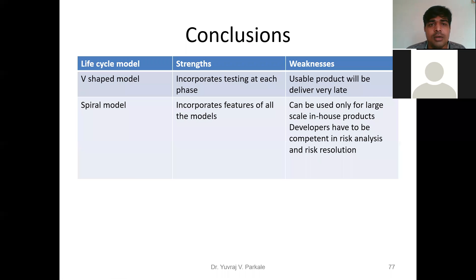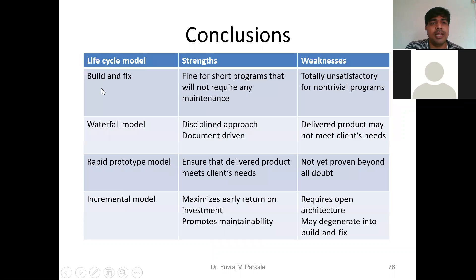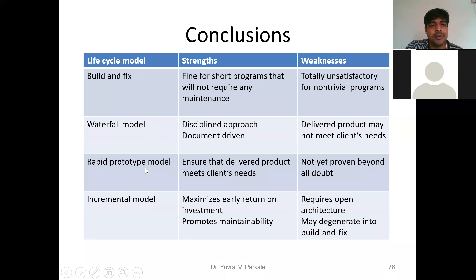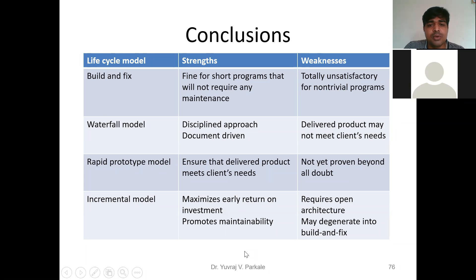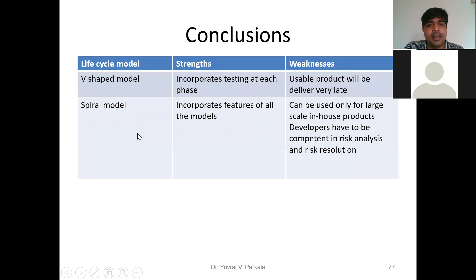This covers all the different life cycle models for embedded systems. Even if not fully understood, the reference table helps. You need to understand the basic idea of each model — Build and Fix, Waterfall, Rapid Prototype, Incremental, V-shaped, and Spiral — including their strengths, weaknesses, and diagrams. Very favorite exam questions are the Waterfall model, Rapid Prototype model, and Spiral model.